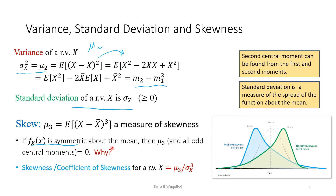For a relative measure, we define the skewness coefficient: mu3 divided by sigma_x cubed. This normalized measure tells us whether the PDF is tilted to the right, to the left, or is symmetric.